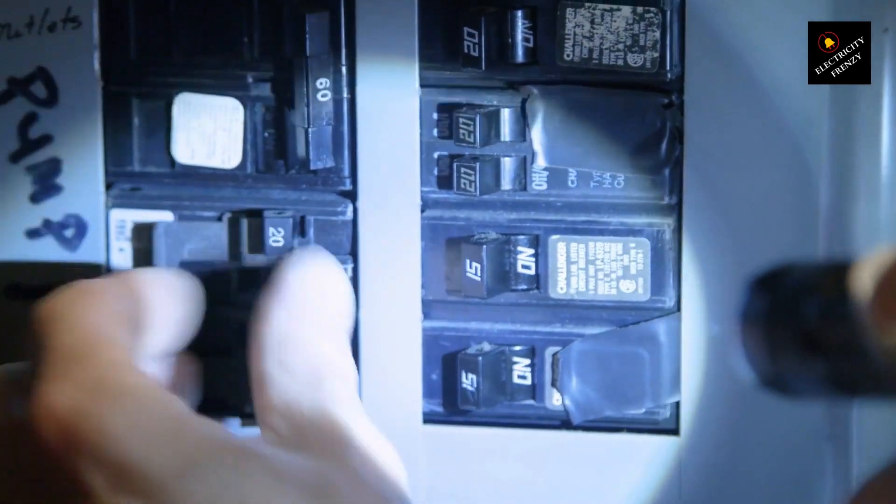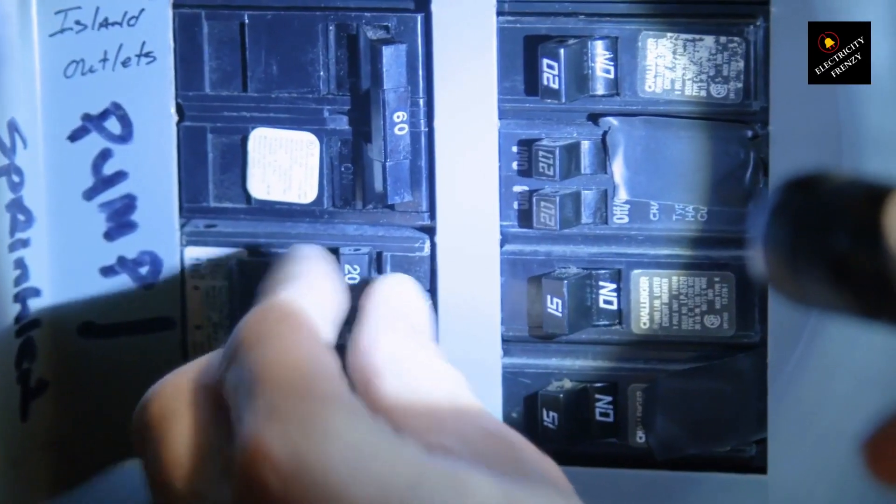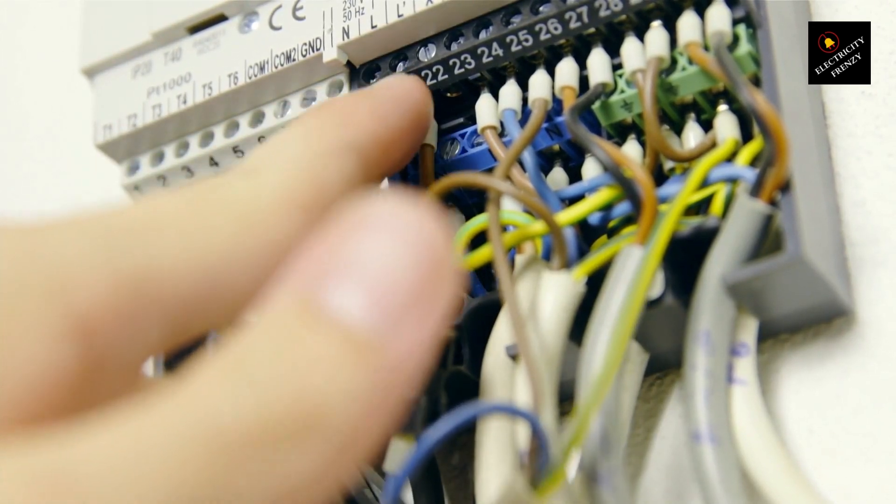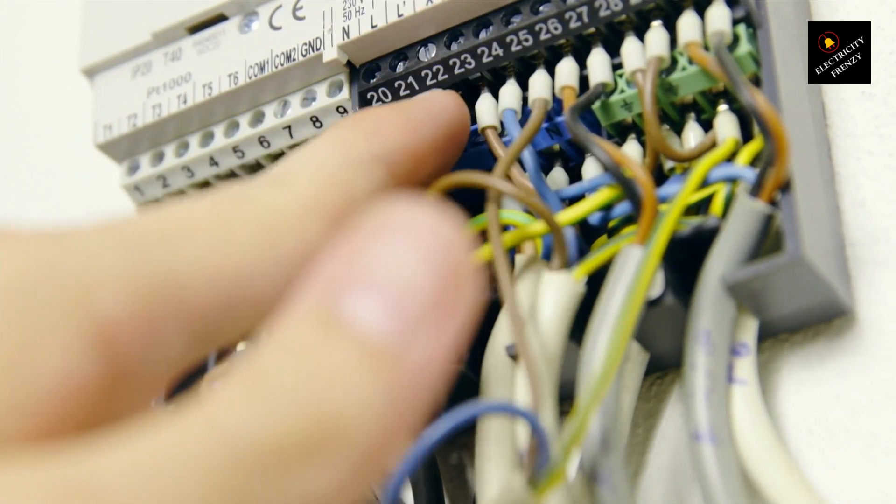Additionally, have a qualified electrician examine the wiring to check for any signs of damage or improper installation. They can verify if the wiring size and type are appropriate for the dryer's electrical requirements.